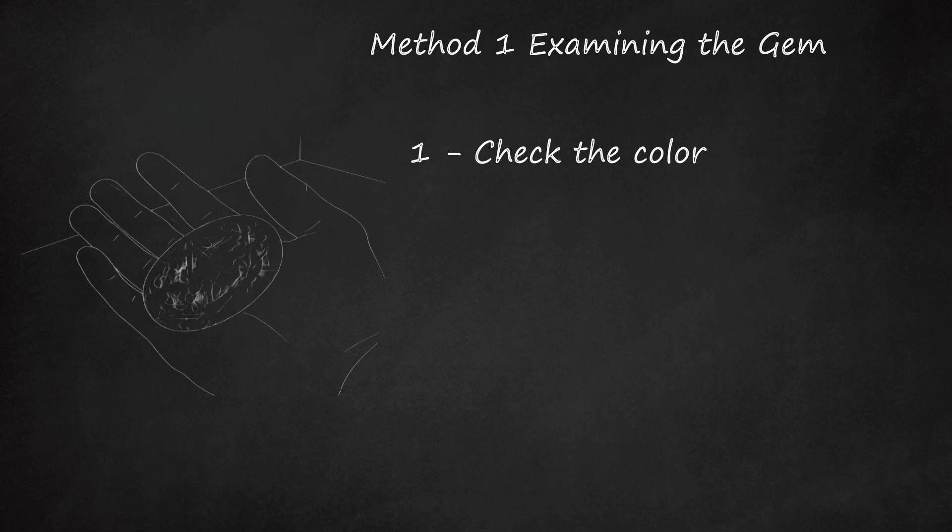Some amethyst gems may be so light there is only a light purple glimmer. Some may be so dark that, under light, they appear blackish. Color will not be entirely consistent in authentic amethyst. Your gem should have different hues of purple throughout and color may change slightly in response to different lighting.